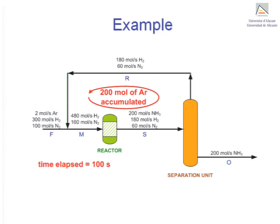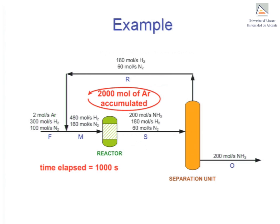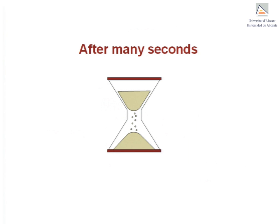After 1000 seconds, 2000 moles of argon will have entered and remain trapped inside the system without any possible means of leaving it. It now becomes clear that the argon in the recycle stream will continue to accumulate at a rate of two moles per second. This situation is unsustainable and will lead to problems in the system.